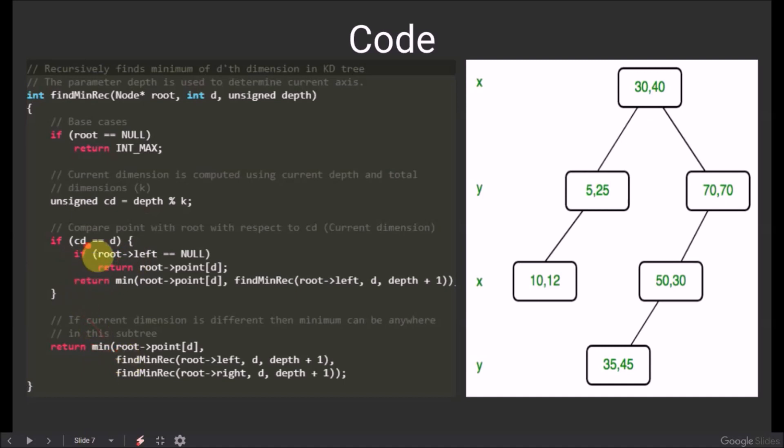When the current dimension is equal to the depth, we only have to search the left subtree. Suppose we are starting at 30,40, the required dimension is x, and the current dimension is also x. So therefore, we will search only in this left subtree.